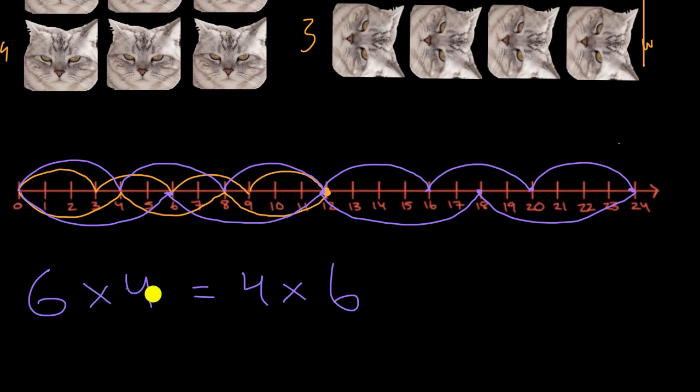So big takeaway, order doesn't matter when you are multiplying numbers like this. And this is sometimes referred to as the commutative property, it's a fancy word, but it's really just saying that whether you're doing six times four or four times six, the commutative property of multiplication says, hey, those two things are going to be equivalent.